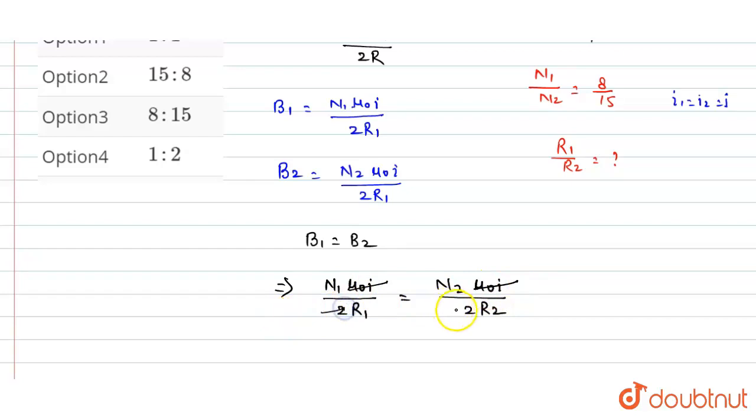Therefore N1 by N2 equals R1 by R2. It is given that N1 by N2 equals 8 by 15, so this equals R1 by R2. Therefore the value of R1 ratio R2 is equal to 8 is to 15.